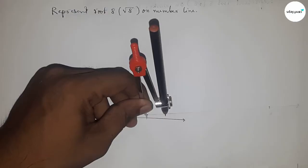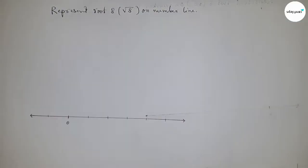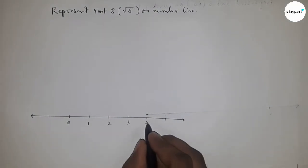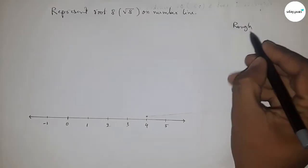You can choose any length to mark the numbers on the line. So this is one, two, three, four, five and so on, and this side minus one and so on.